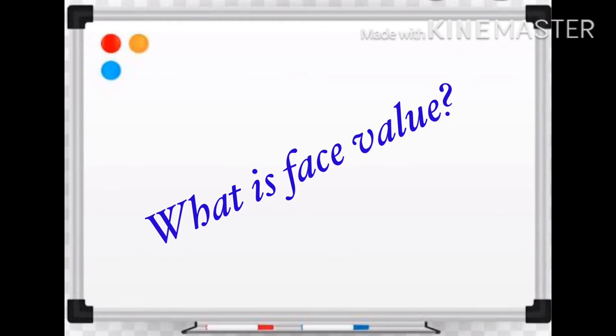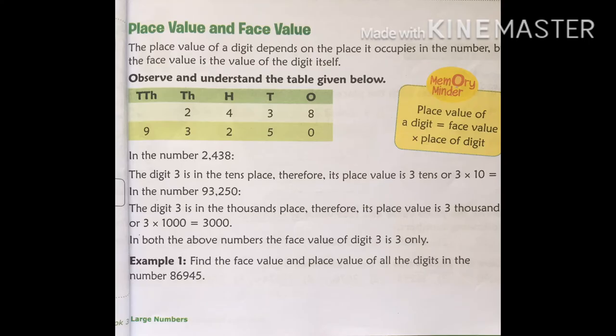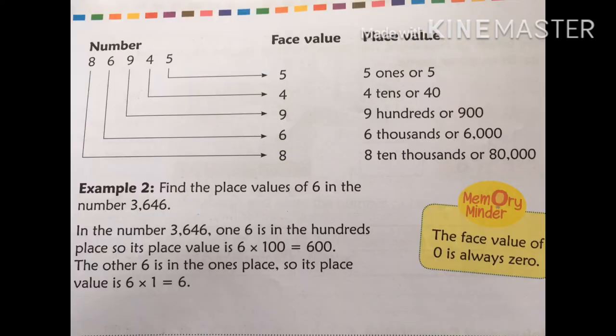Now let us discuss face value. The face value of a digit is the value of the digit itself. See in the picture, we have the number 86945. Here we can see the face value of 5 is 5, the face value of 4 is 4, the face value of 9 is 9, 6 is 6, and the face value of 8 is 8.